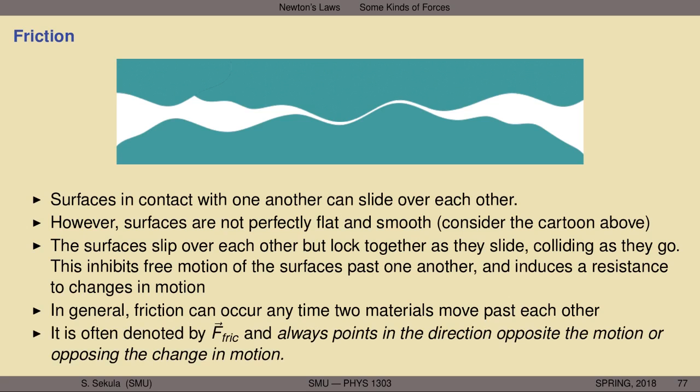This force is denoted many ways — as a vector F with subscript FRIC, or friction in the subscript, or a little f with a vector hat over it. Different books use different notations. The key thing is that it always points in the direction opposite the motion — or if you are trying to change the motion, it attempts to oppose that change.